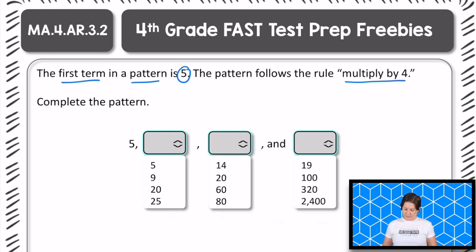So here we go. We've got the first term right here of 5. The next term, we would need to multiply 5 by the rule of times 4. So 5 times 4 is what?